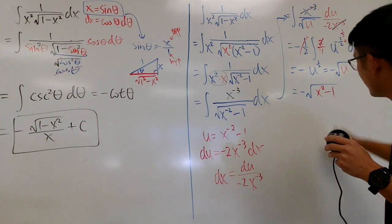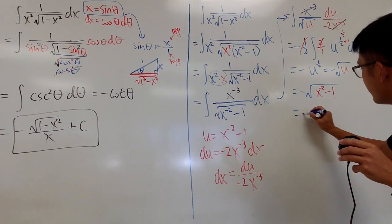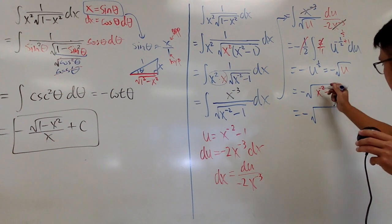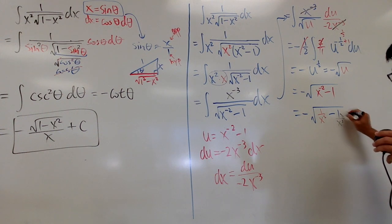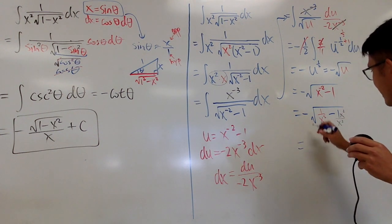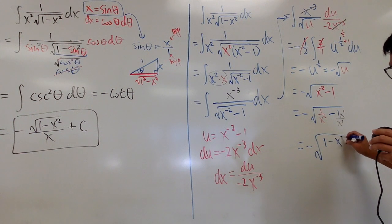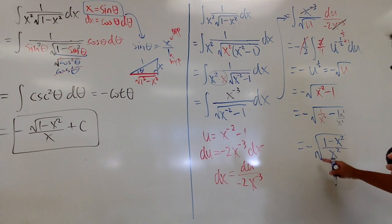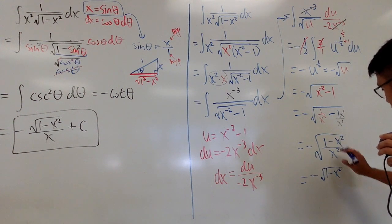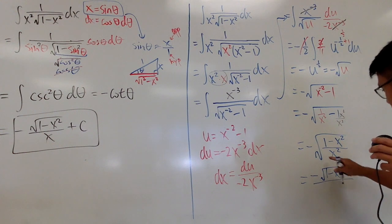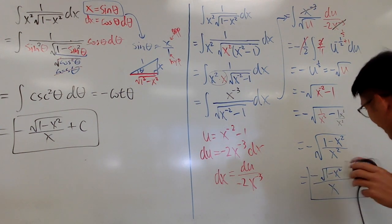This doesn't look like our earlier answer yet, but we can make it match. Negative square root of (x to the negative 2 minus 1) equals negative square root of (1 over x squared minus 1). Getting a common denominator gives negative square root of (1 minus x squared over x squared). Taking the square root of top and bottom gives negative square root of (1 minus x squared) over x, plus C — the same answer!